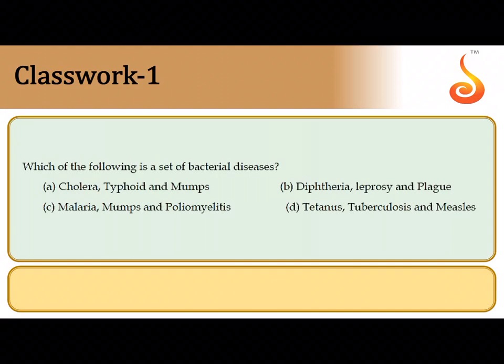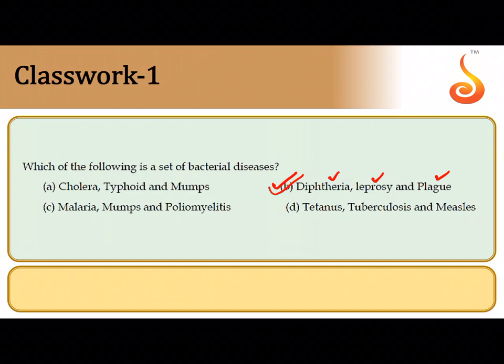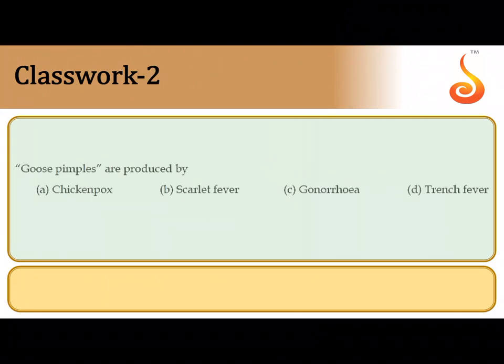Moving on to the chapter human health and disease. The first question: which of the following is a set of bacterial diseases? The correct answer is option B — diphtheria (Corynebacterium diphtheriae), leprosy (Mycobacterium leprae), and plague (Yersinia pestis). All of them are bacteria, so the set includes only bacterial diseases.